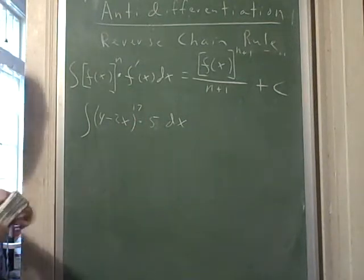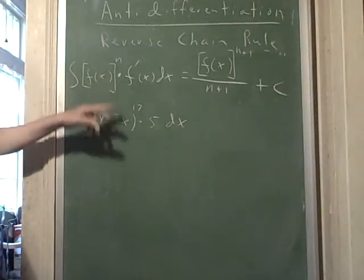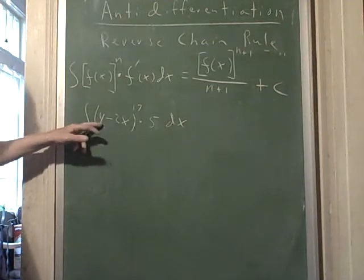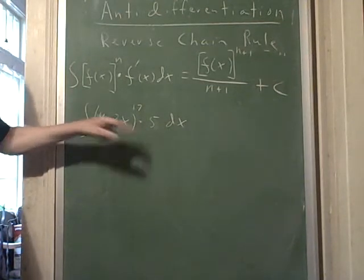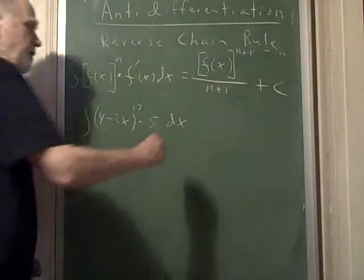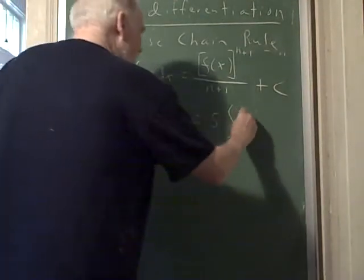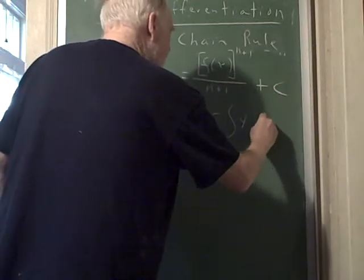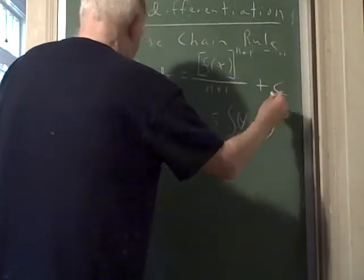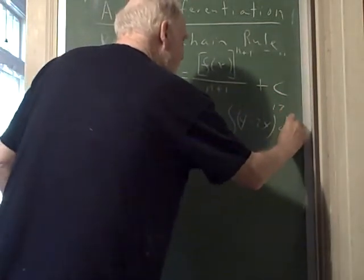Now I've got a function to a power just like this, and I think, do I have f prime? Well, the derivative of this is just negative 2. I've got the wrong constant, and what you do in that case is you factor the 5 out first, so you have a clean slate here.